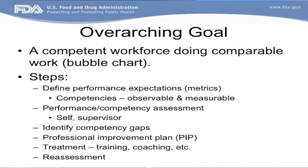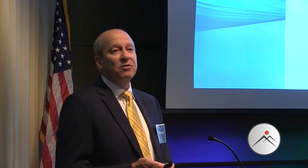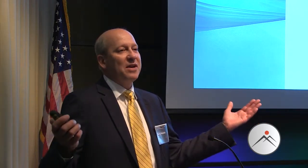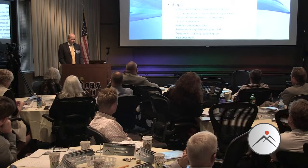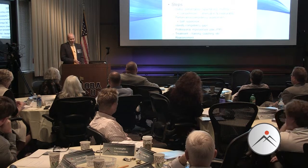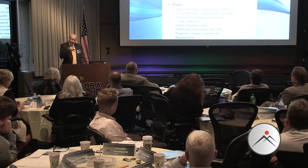The supervisor and agency look at results - for example, if everyone scored themselves low or management scored the unit low in HACCP knowledge, there's a gap. There's also a gap if there's a big difference between how people see themselves and how management sees workers. Once gaps are identified, the next step is a professional improvement plan, because there could be so many gaps you can't address all of them at once.